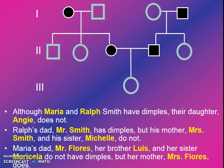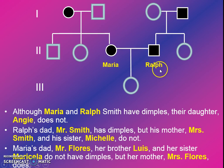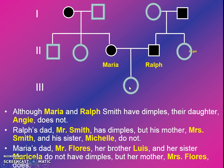Hopefully you gave it your best effort. Let's try to figure out and check our answers. So the first part says Maria and Ralph Smith have dimples. So I am writing Maria and Ralph, who are married, with these two symbols that are filled in, representing that they do have the trait dimples. Maria is the circle because that's female, and this is her husband Ralph. Their daughter does not have dimples — the daughter's name is Angie.